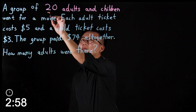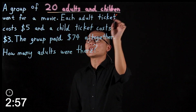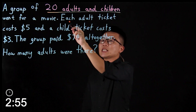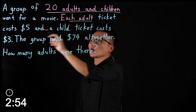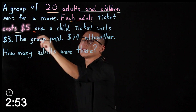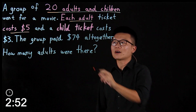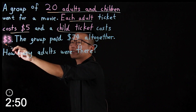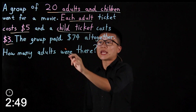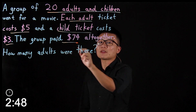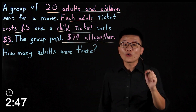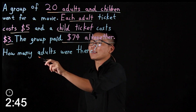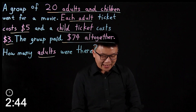A group of 20 adults and children went for a movie. Each adult ticket cost $5 and a child ticket cost $3. The group paid $74 altogether. How many adults were there?